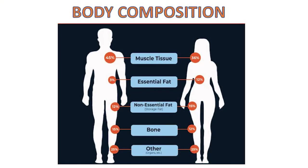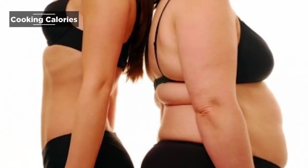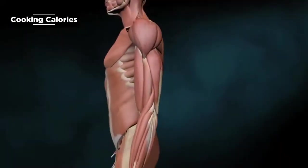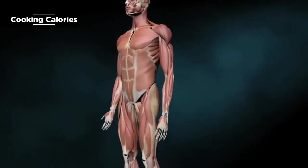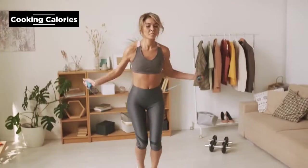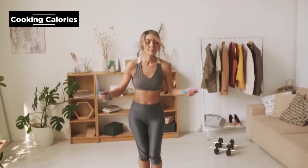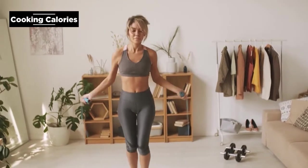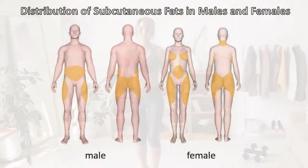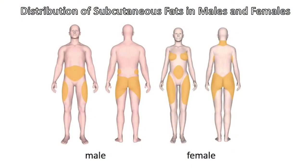Body composition and gender: The more muscle tissue or lean tissue in the body, the higher the BMR, because muscles require more energy to function than fat. The more muscle tissue you carry, the more energy your body needs just to exist. This is also a reason why males usually have a higher BMR compared to women, because women have a higher proportion of body fat compared to men.